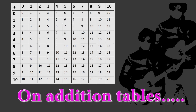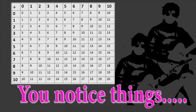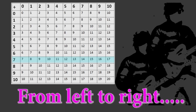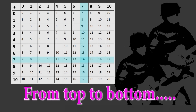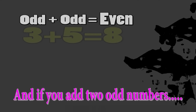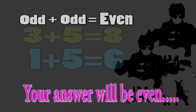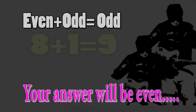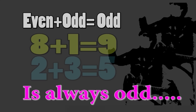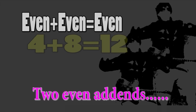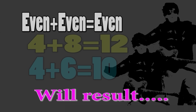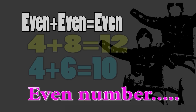On addition tables you notice things. Just choose a row and look horizontally — from left to right numbers increase by one, and from top to bottom they do the same in every column. If you add two odd numbers your answer will be even, and the sum of an even and odd is always odd.